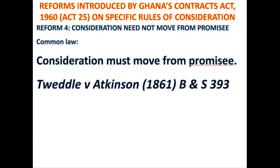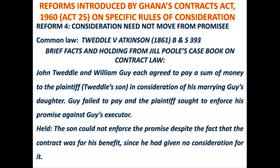Now these are the facts of Tweddle v Atkinson. Pay critical attention to the names: Don Tweddle and William Guy each agreed to pay a sum of money to the plaintiff in consideration of the plaintiff marrying Guy's daughter. So Don Tweddle and William Guy are the respective fathers of the groom and the bride. Two people are going to marry and their respective fathers agreed to pay an amount of money to the plaintiff — the son — so that he should go ahead and marry Guy's daughter.